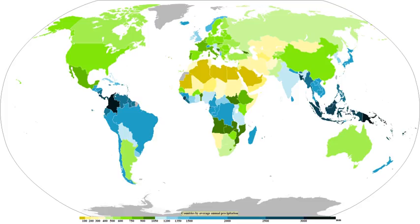For those looking to measure rainfall most inexpensively, a cylindrical can with straight sides will act as a rain gauge if left out in the open, but its accuracy will depend on what ruler is used. Any of the above rain gauges can be made at home. Various networks exist across the United States where rainfall measurements can be submitted through the internet, such as CoCoRaHS or Globe. If a network is not available, the nearest local weather office will likely be interested in the measurement.